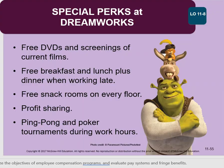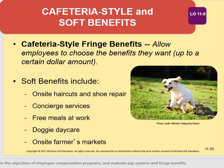Some companies use exotic fringe benefits to recruit the best employees. For example, DreamWorks offers free DVD rentals, breakfast, lunch, profit sharing, and free snacks. Cafeteria-style benefits allow employees to choose the benefits they want up to a certain dollar amount — for instance, given $5,000 in fringe benefits, you can select how to spend it. Other benefits are soft benefits, meaning employees can use them or not.